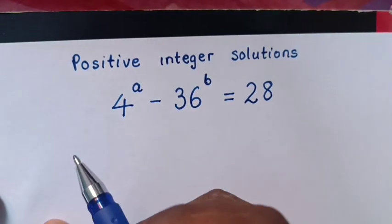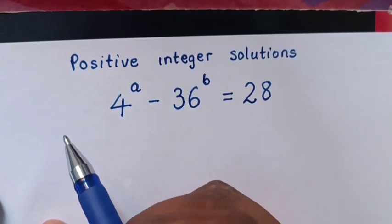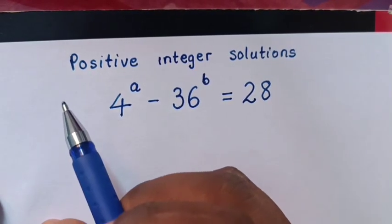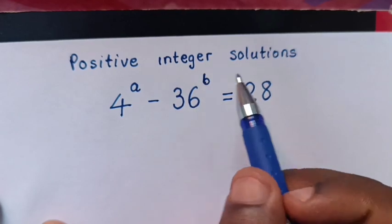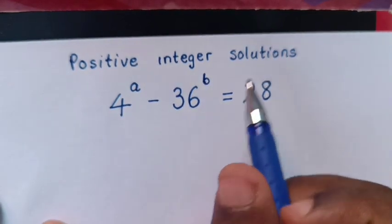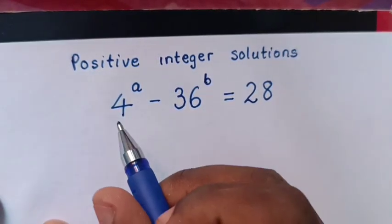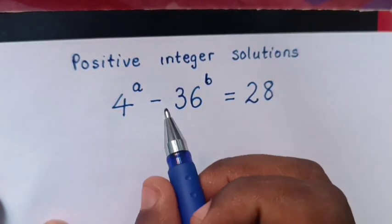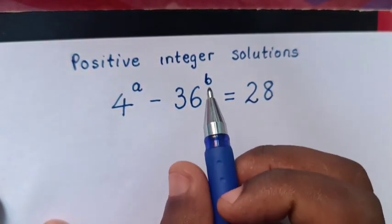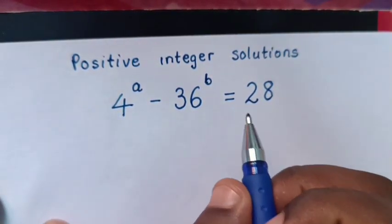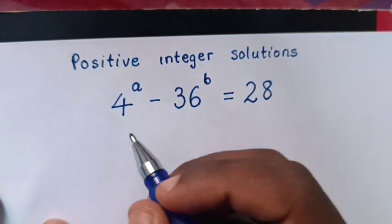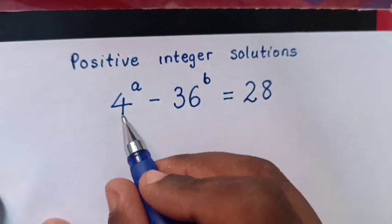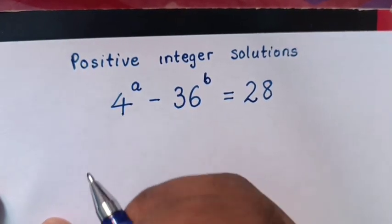Hello, how to solve this problem of positive integer solutions? 4^a minus 36^b is equals to 28. Find the value of a and b.